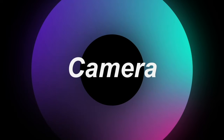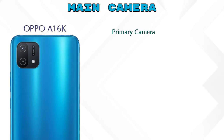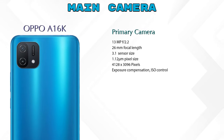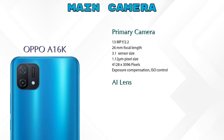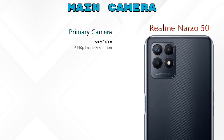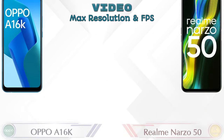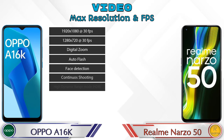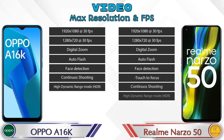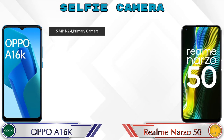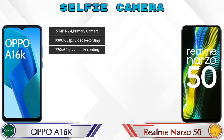Now let's see details about cameras. For the rear camera, the A16k has two cameras: a primary camera and an AI lens. The Narzo 50 has three cameras: a primary camera, macro camera, and depth camera. For video, the A16k has 7 and the Narzo 50 has 8 different feature options available.